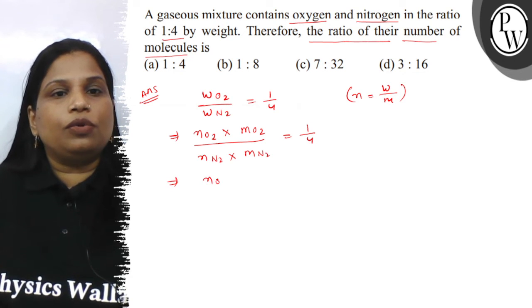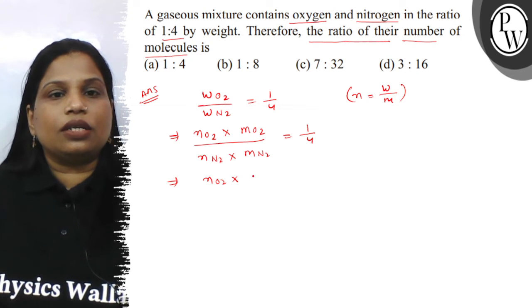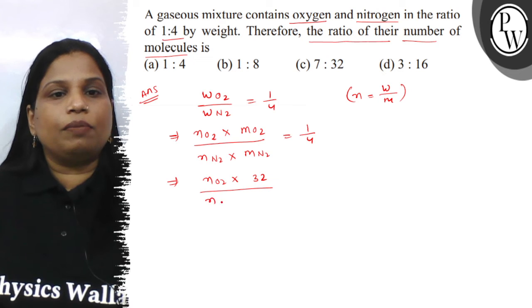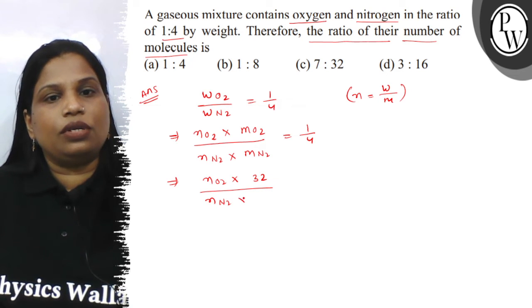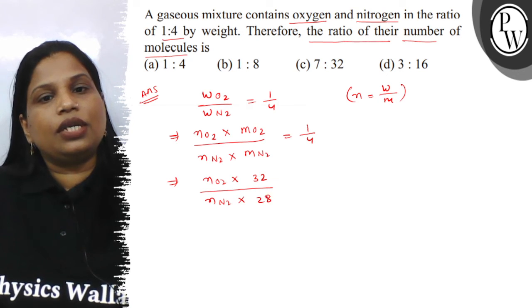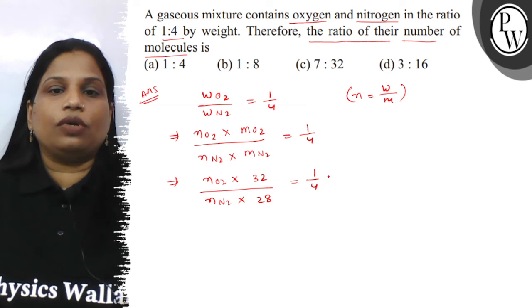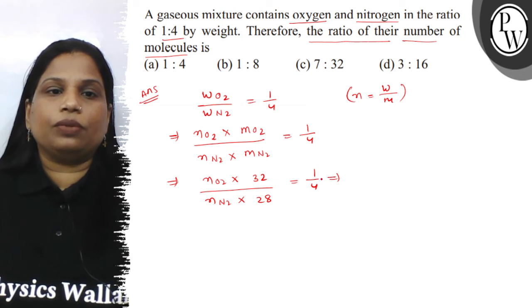So number of moles of oxygen into molecular mass of oxygen, which is 32, divided by number of moles of nitrogen into molecular mass of nitrogen, which is 28 — nitrogen's molecular mass is 28 — this is equal to 1 by 4.